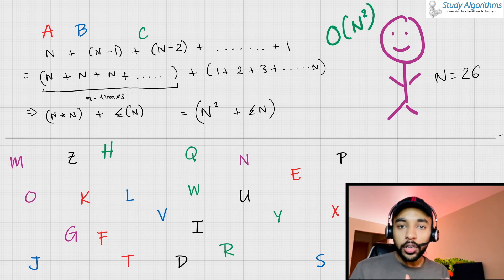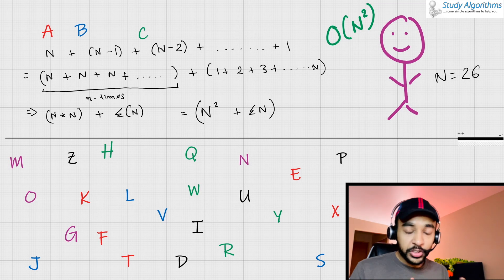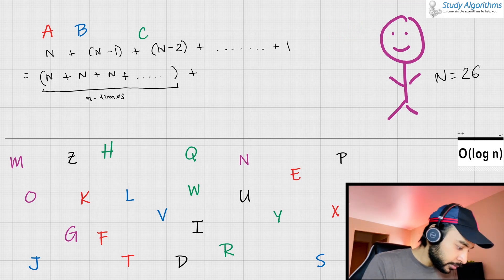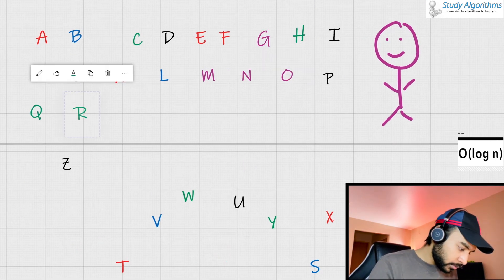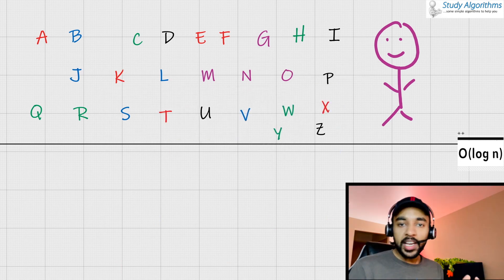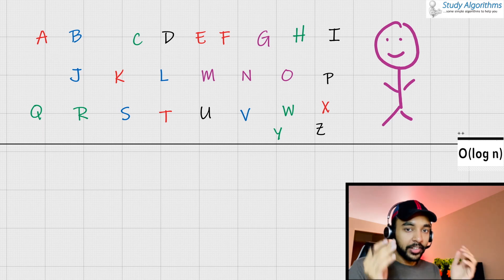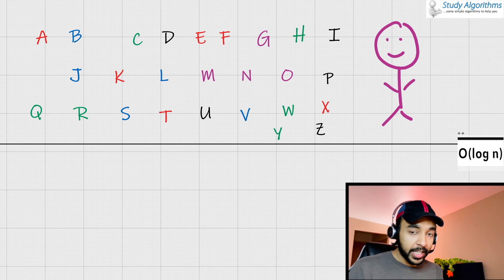Let us now have a look at order of log N. So, if you remember, we have now sorted all of these characters. Let us play a game now. I ask you that, okay, I have guessed some character in my mind and I want you to guess it. Since all of these characters are sorted, what you can do is you can start asking me questions.